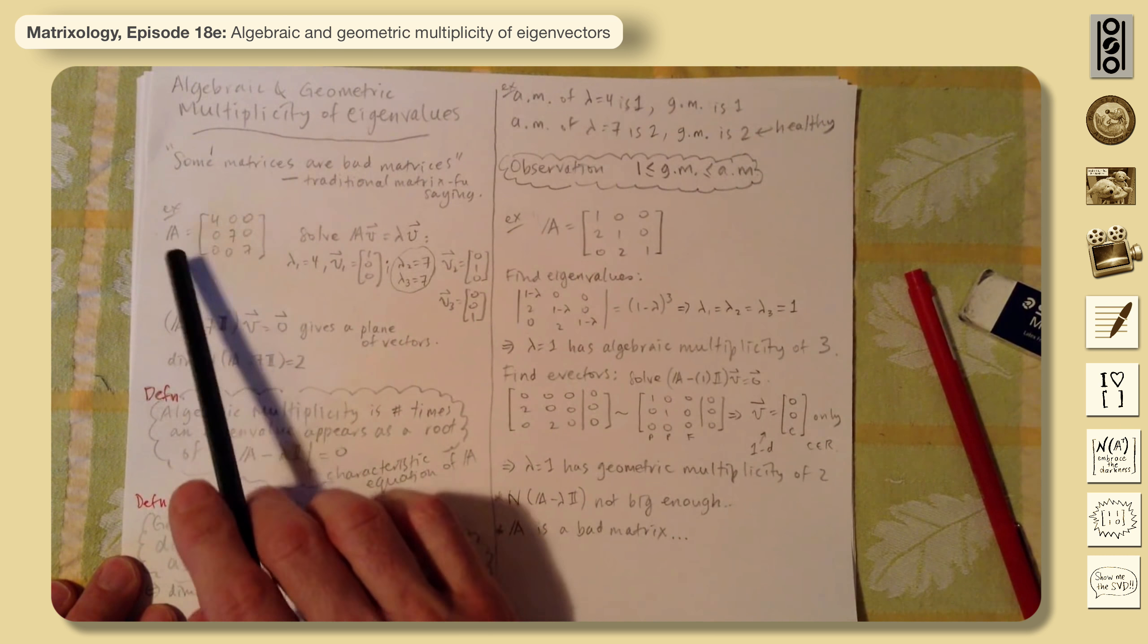The null space is not big enough. It has only dimension of one. And we say that lambda equals one has a geometric multiplicity of one. So A is a bad matrix, a bad matrix.